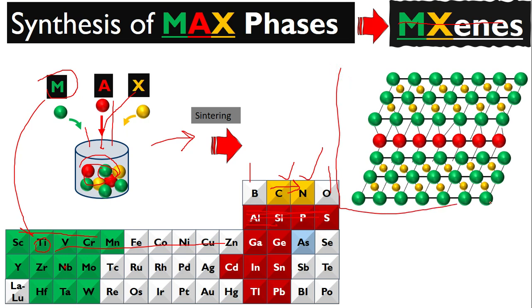You get these phases that are basically called MAX phases. You see here the M is here, the X is here, the A is here. When we get MAX phase, it is very easy now to get MXene. Just remove this A here using some etching method or other methods, and you get MXenes.